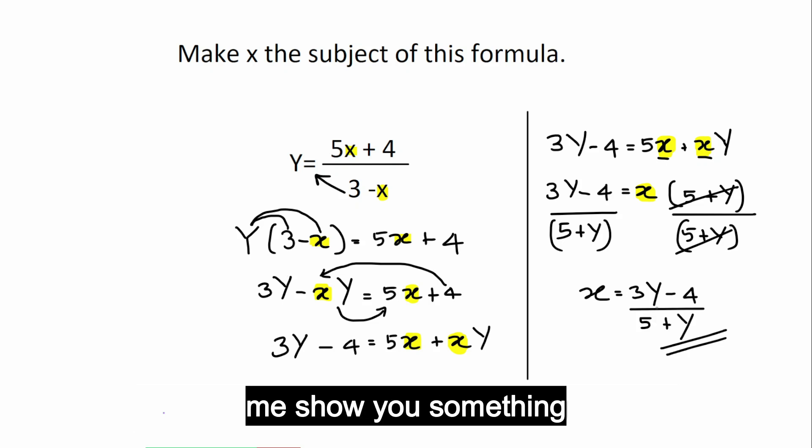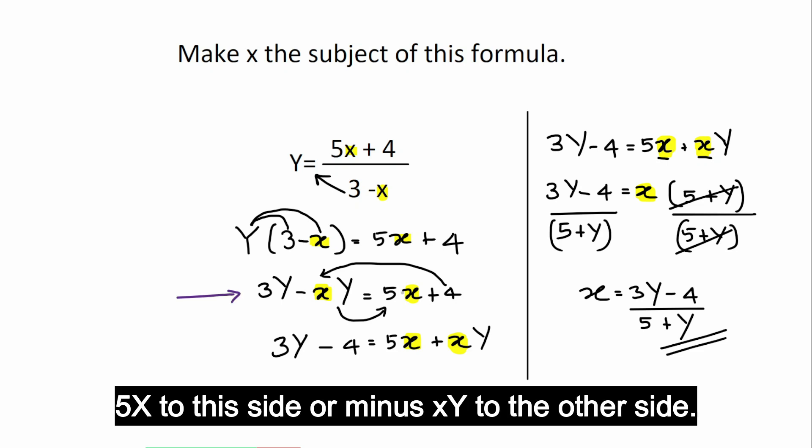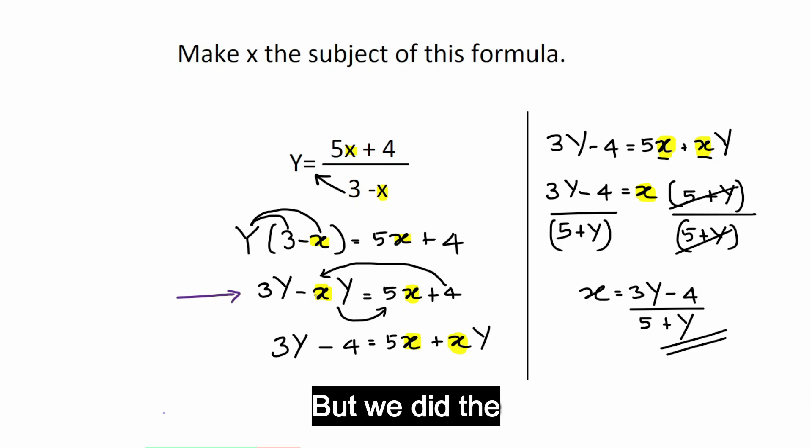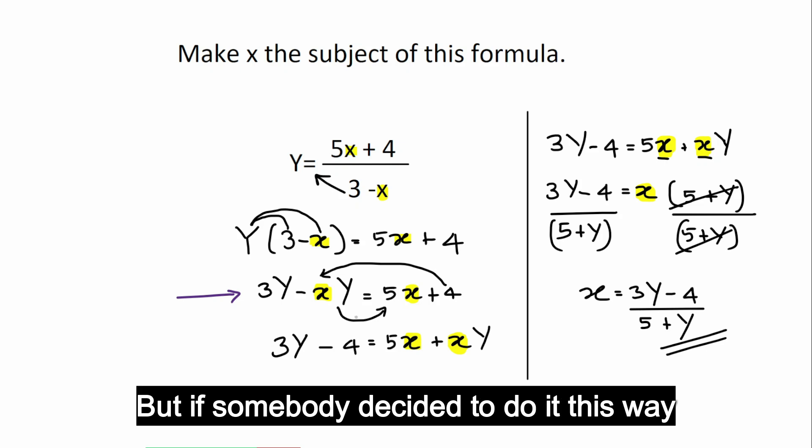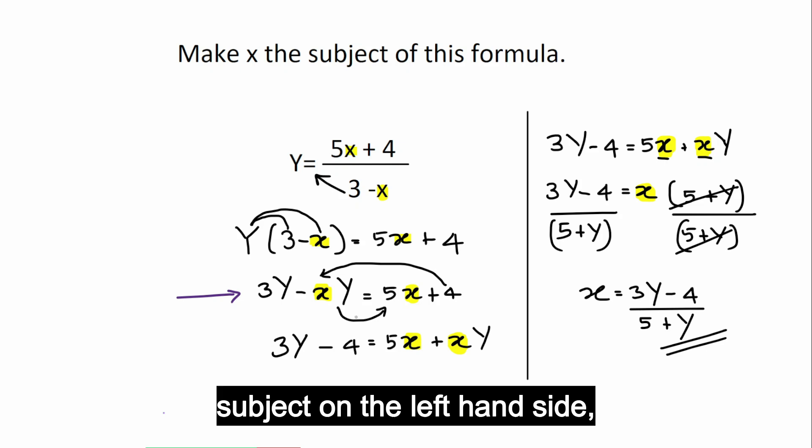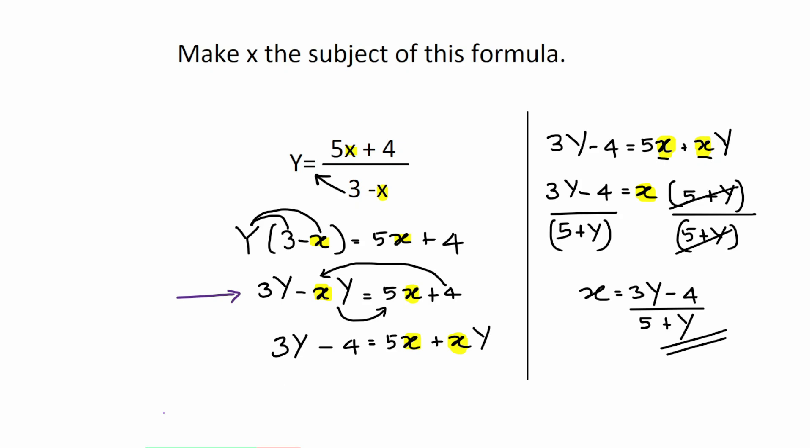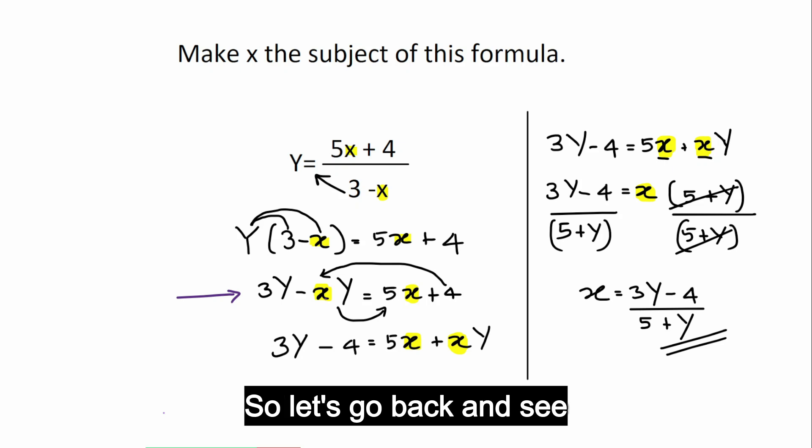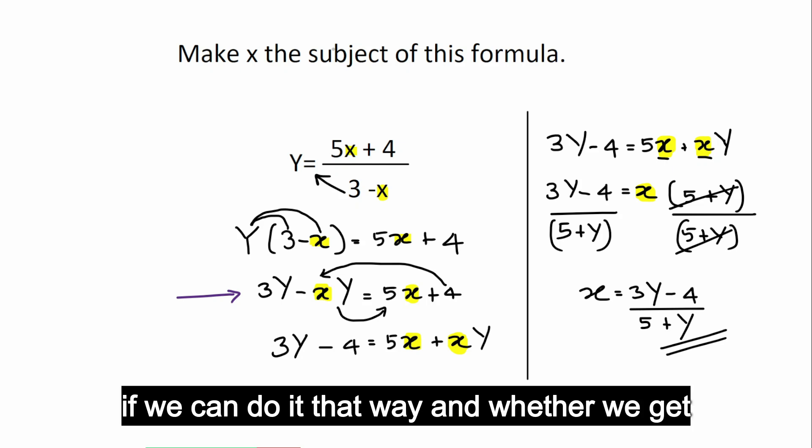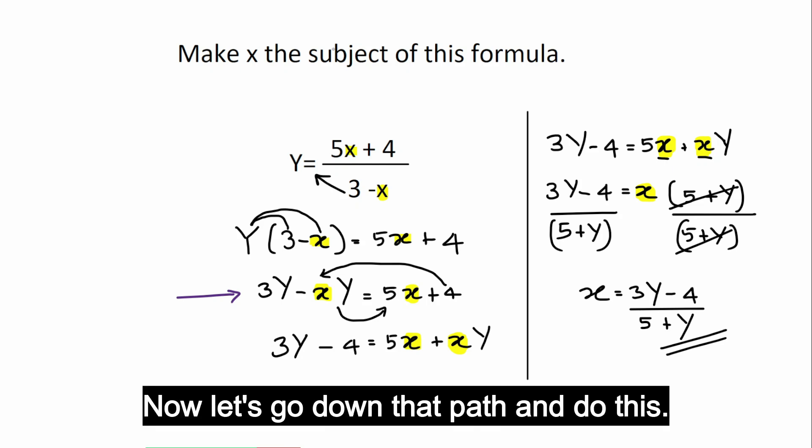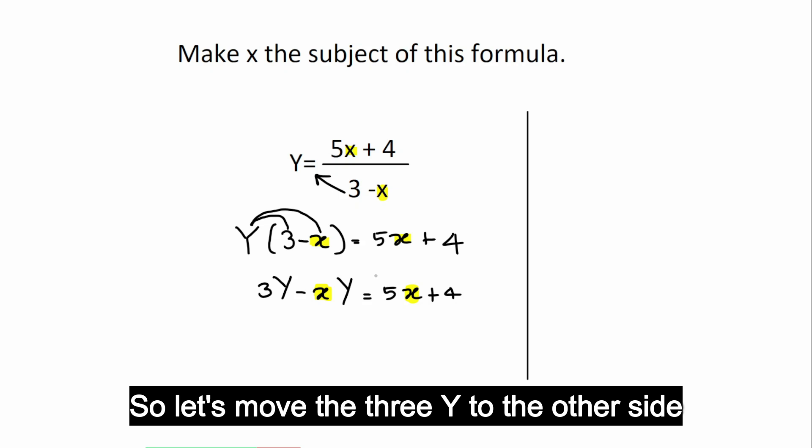Now, we got the answer to this question, but let me show you something. At this stage here, I told you, it doesn't matter whether you take 5x to this side or minus xy to the other side, but we did the step that we did because it makes it easier. It avoids these negatives. But somebody decided to do it this way because some students like to get the subject on the left-hand side. Let's go back and see if we can do it that way and whether we get the same answer.